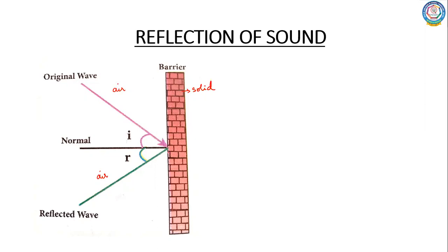This is exactly similar to the reflection of light which you read in your second chapter. The same phenomenon — bouncing of light waves there, bouncing of sound waves here. The surface where the sound waves are bounced back is called the interface. The interface is the surface that separates two different media.